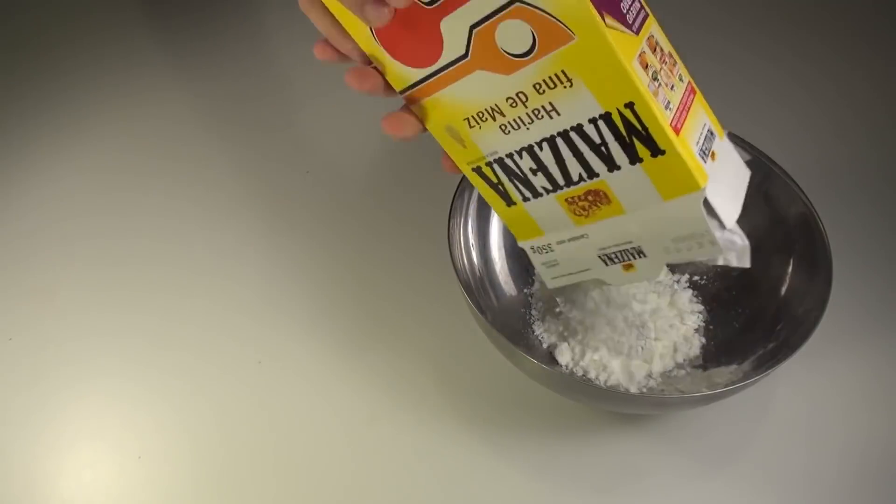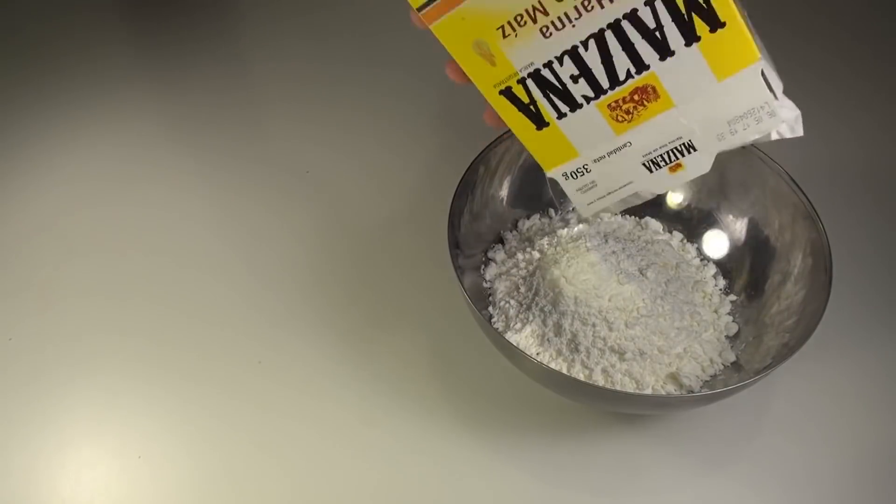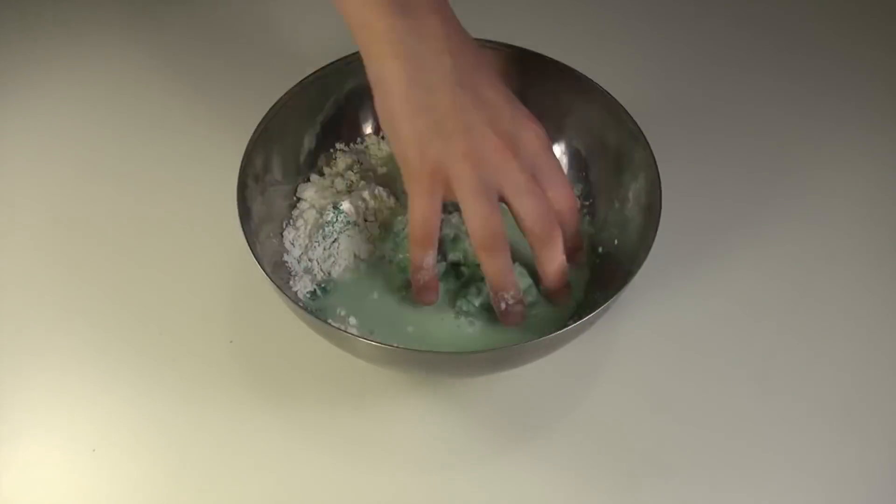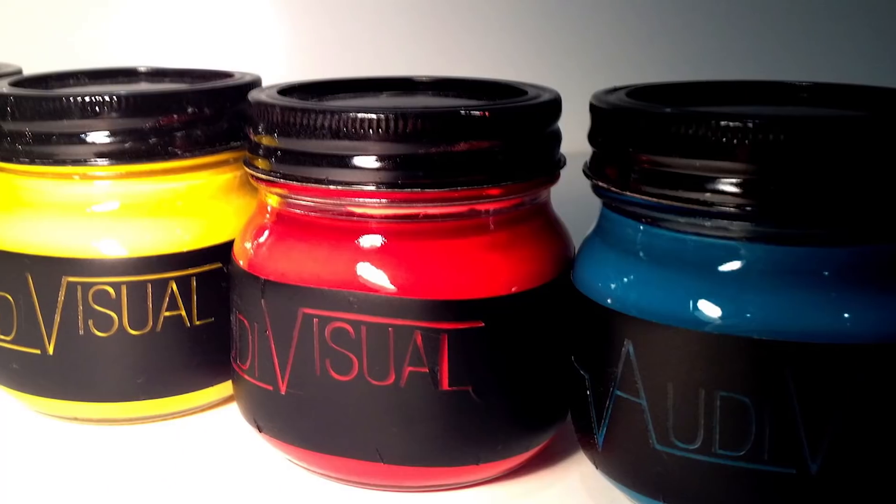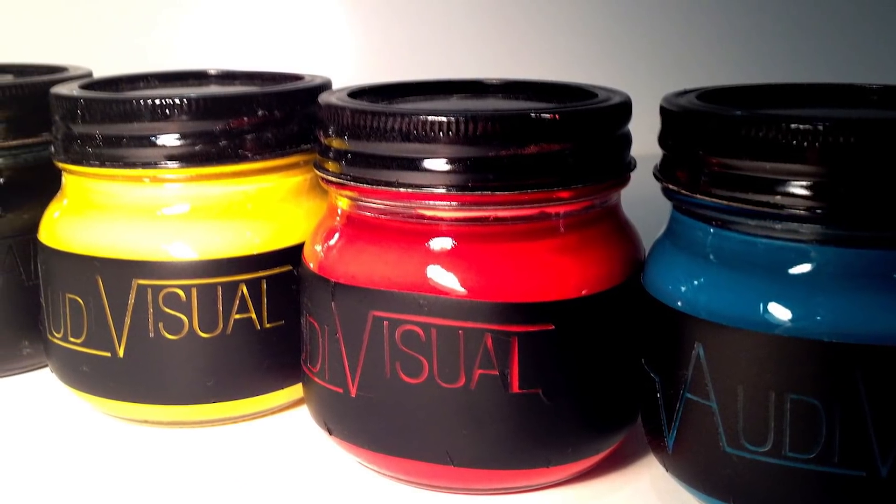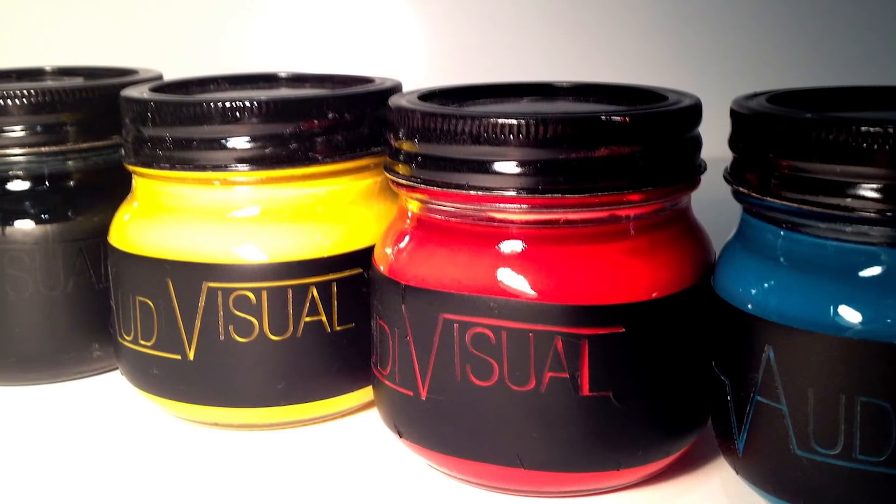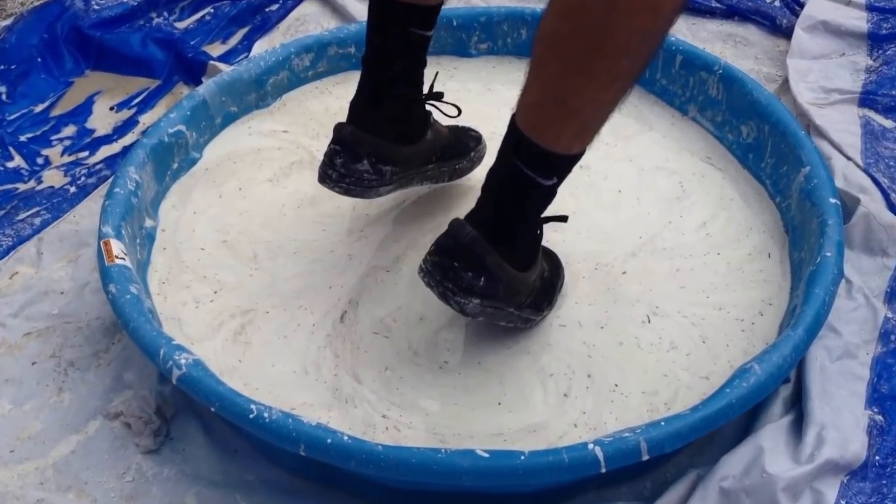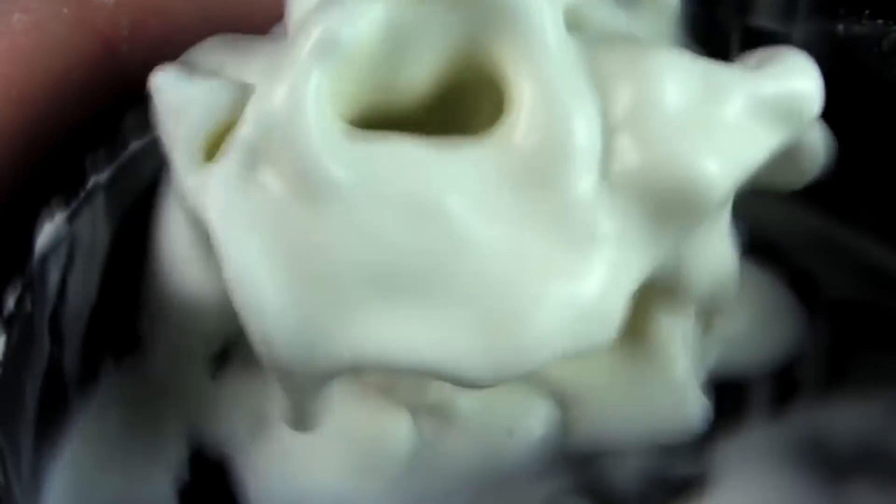Seuss story. All it takes to make oobleck is mixing two parts cornstarch to one part water, which makes this experiment something the entire family can get into. Food coloring is optional, although it does make the overall effect more impressive.